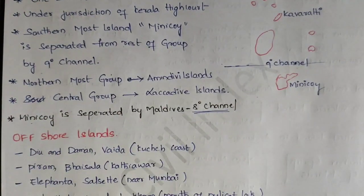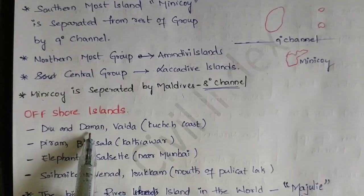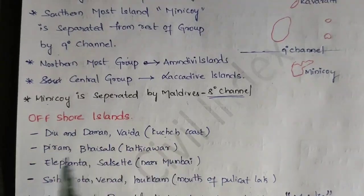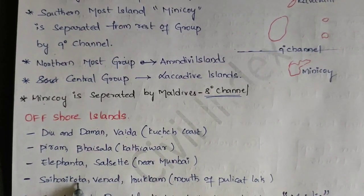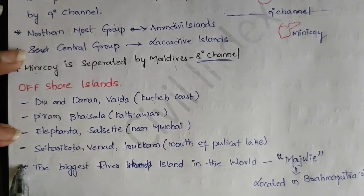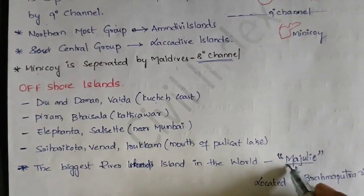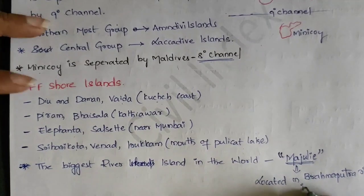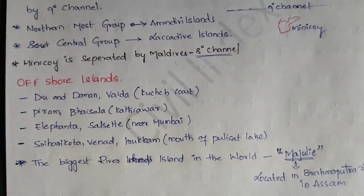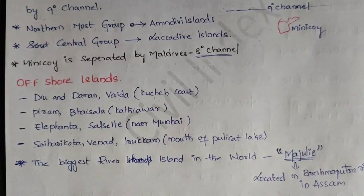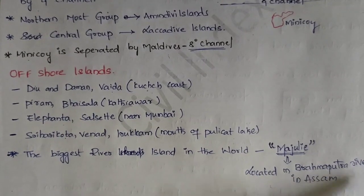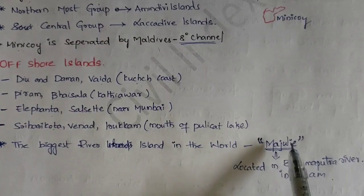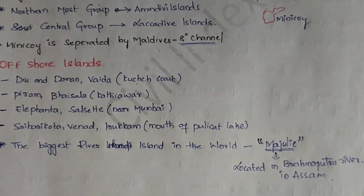Other offshore islands include Diu and Daman on the Kutch coast, Elephanta and Salsette near Mumbai, and Sri Harikota near the mouth of Pulikat Lake. The biggest river island — and most importantly, the biggest river island in the world — is Majuli, located in the Brahmaputra River in Assam. This is a very important point.